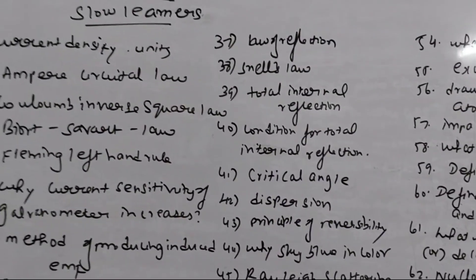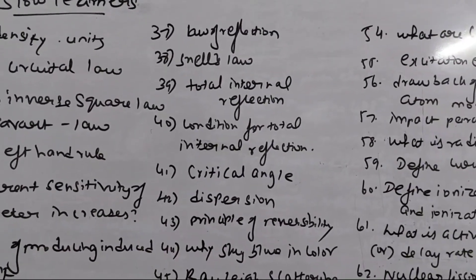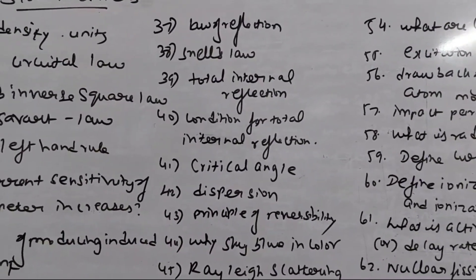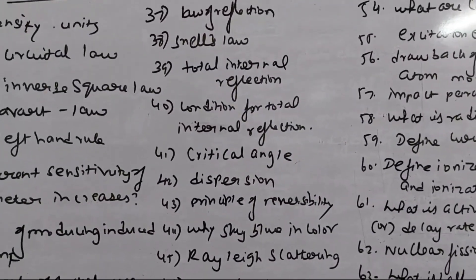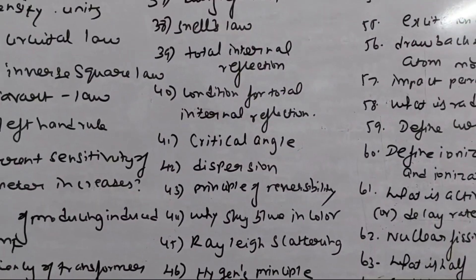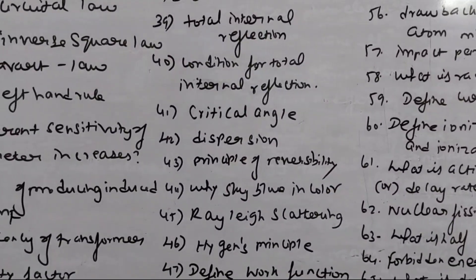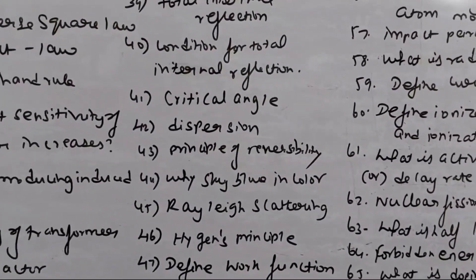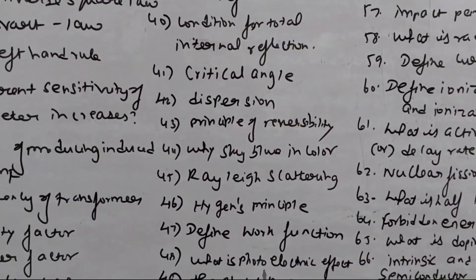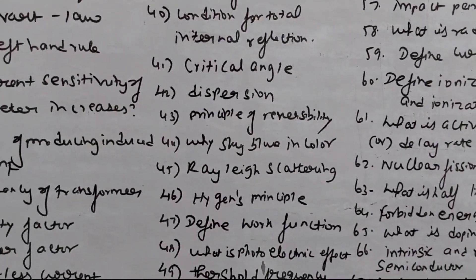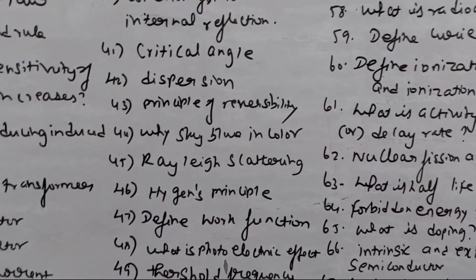6th lesson: Number 37 — Snell's law, that is the law of reflection. Total internal reflection, condition for total internal reflection, critical angle. Principle of reversibility. Why does the sky appear blue in color?